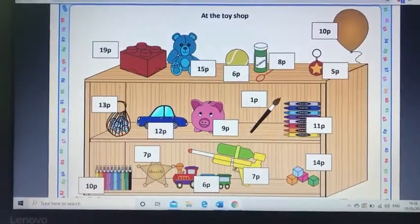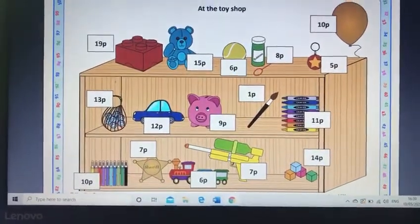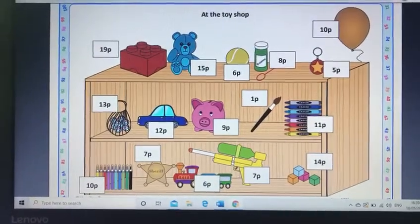So we've been working really hard on our number bonds to 10, our number bonds to 20 and bridging to 10. So we are going to be using those three skills today in the context of using money.